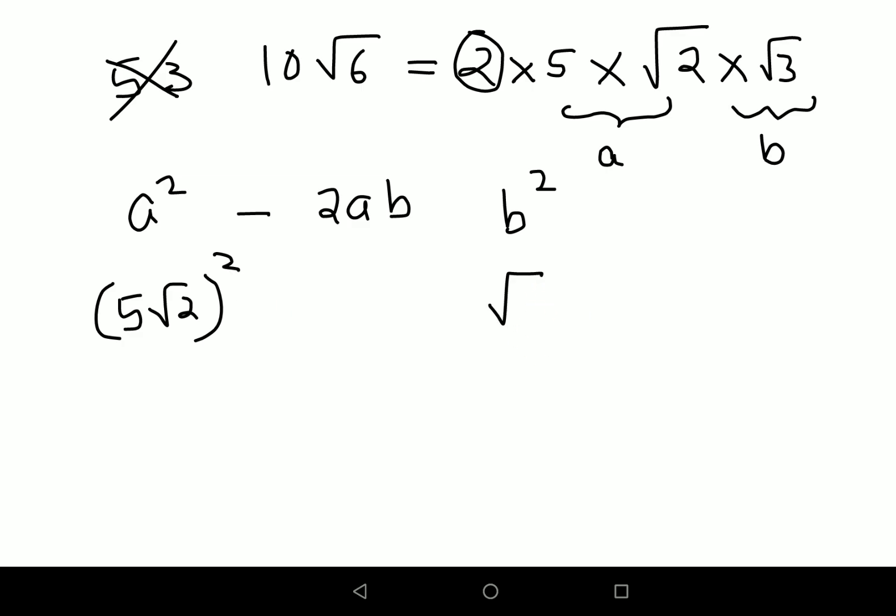So if your a is 5 root 2 the whole squared, and b is root 3 the whole squared. Let's do this again: a b raised to m can be written as a raised to m into b raised to m. So this can be written as 5 squared which is 25 into root 2 squared which is just 2, and root 3 squared is just 3.